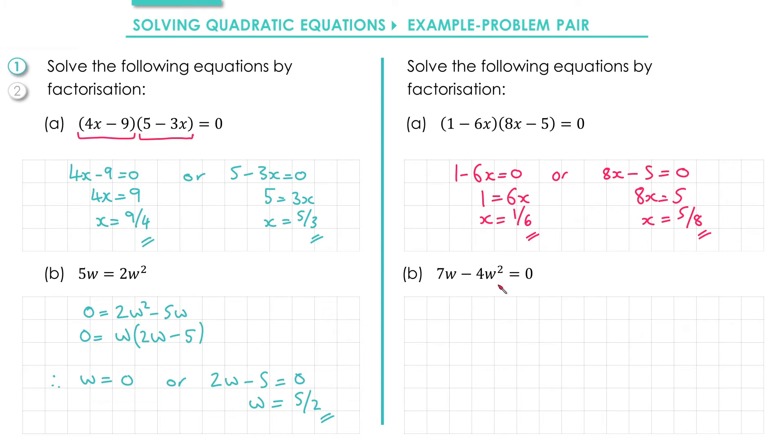We have 7w - 4w² = 0. This time the right hand side already equals 0 and both terms contain w so we can factorize a w outside of the brackets. That leaves us with 7 - 4w inside the brackets. Therefore we get either w = 0 or 7 - 4w = 0. Adding 4w to both sides gives us 7 = 4w and then dividing through by 4 gives us w = 7/4.